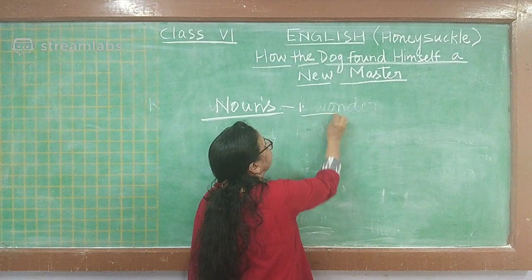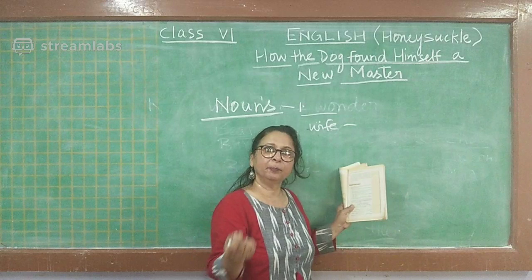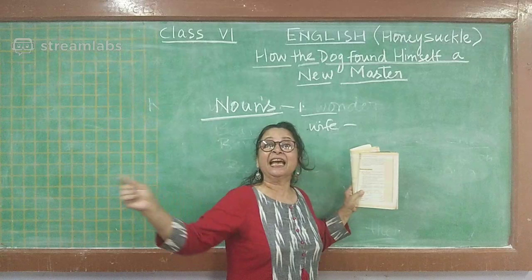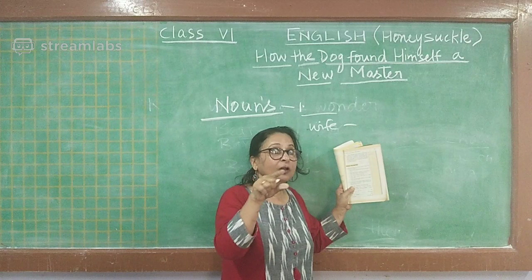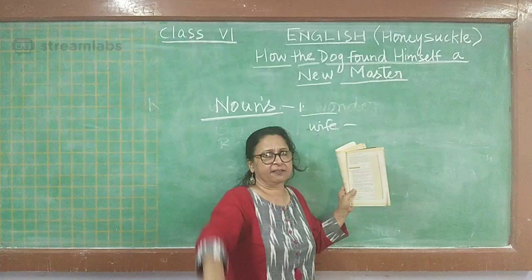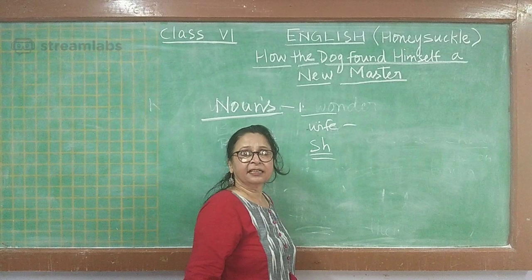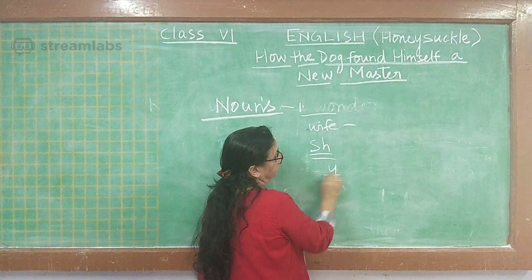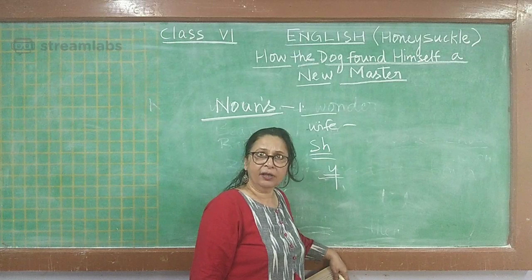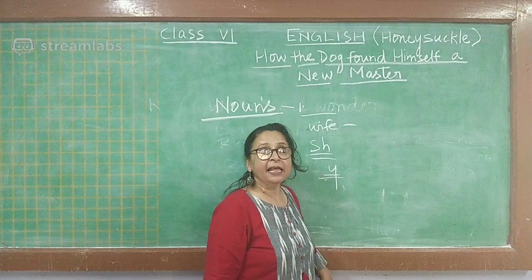Let us look at plural endings. Words ending in 'fe' change to 'ves': wife becomes wives, knife becomes knives. But 'roof' — with the 'oof' sound — just adds 'S': roofs, not rooves. Words ending in 'sh' add 'ES.' Words ending in 'Y' change to 'IES.' These are some important rules for common noun plurals.